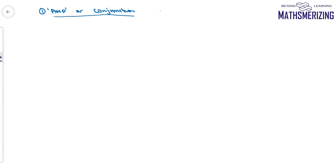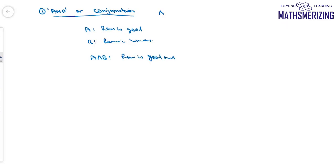Conjunction is represented by the upward arrow symbol (∧). If statement A is 'Ram is good' and statement B is 'Ram is honest,' then A and B simply means 'Ram is good and Ram is honest.' One thing we need to study with every connective is its truth table, so we'll study the truth table for conjunction.